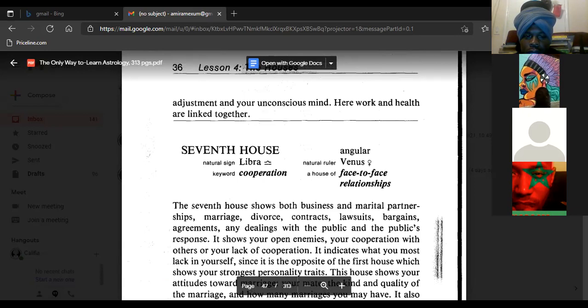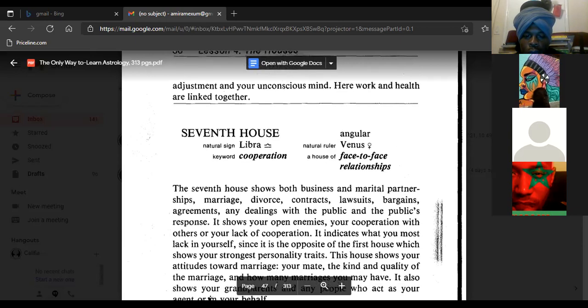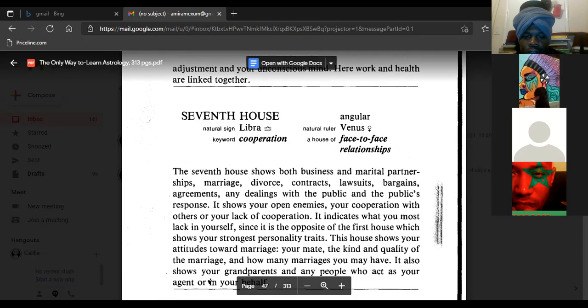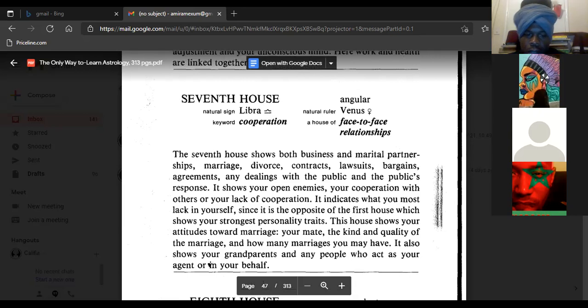Seventh house, natural sign Libra, keyword cooperation, angular, natural ruler Venus, a house of face-to-face relationships. The seventh house shows both business and marital partnerships: marriage, divorce, contracts, lawsuits, bargains, agreements, any dealings with the public and the public's response. It shows your open enemies, your cooperation with others or your lack of cooperation. It indicates what you most lack in yourself, since it is the opposite of the first house.